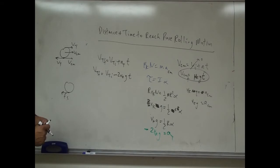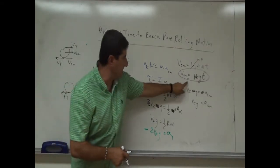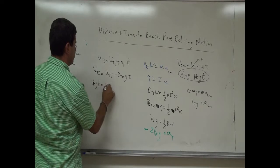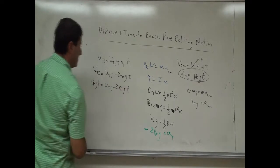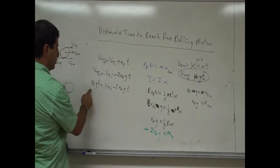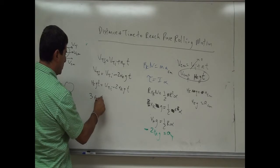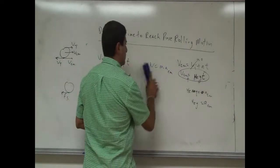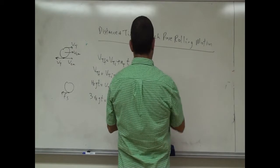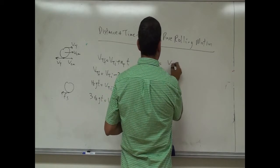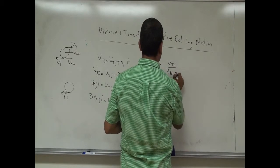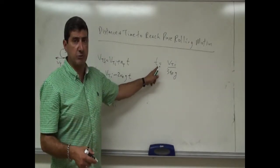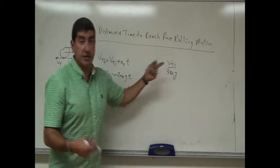Let's solve for the time to establish pure rolling motion. When V_tan_final = VCM, we set V_tan_initial - 2·μk·g·t = μk·g·t. Rearranging, V_tan_initial = 3·μk·g·t. So t = V_tan_initial / (3·μk·g). It depends on how fast I spun it — faster spin means longer time. It also depends on the coefficient of kinetic friction: larger μk means less time.